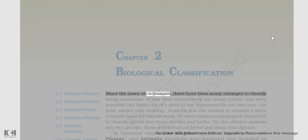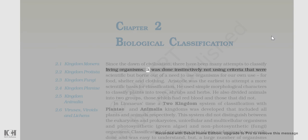Since the dawn of civilization, there have been many attempts to classify living organisms. It was done instinctively, not using criteria that were scientific, but born out of a need to use organisms for our own use — for food, shelter, and clothing.